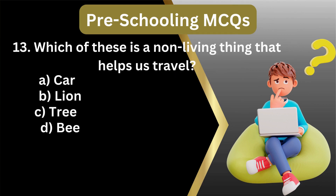13. Which of these is a non-living thing that helps us travel? A. Car, lizard, tree. Answer: A. Car.